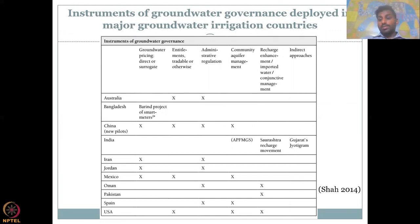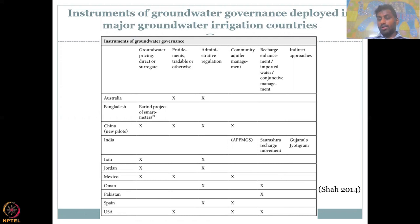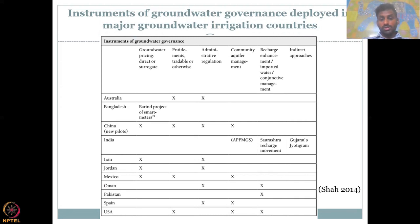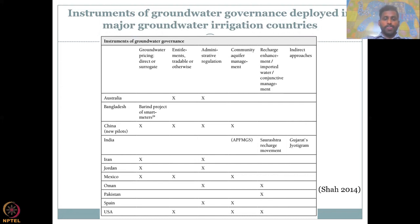Australia is a major irrigation country using groundwater. They don't have groundwater pricing or any type of metering in 2014. There are entitlement movements which legalize certain people to use groundwater, and administrative regulations are present with some monitoring. But there's no pricing and no community management or recharge development. This is also because Australia's groundwater resources, as per the previous figure, are not much depleted or in the red zone. When you come to Bangladesh, which is in the red zone, meters are present to monitor groundwater use, which is a very important step in identifying equitable share. Other mechanisms are not present.